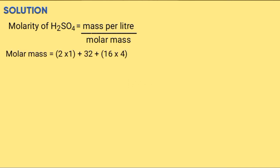Solution: Molarity of sulfuric(VI) acid equals mass per liter over molar mass. Molar mass of sulfuric acid is 2 times 1 plus 32 plus 16 times 4, which is 98 grams per mol. And 9.8 grams per liter over 98 grams per mol equals 0.1 mol per dm³, and molarity is 0.1 molar.